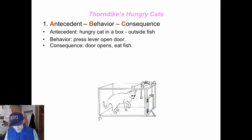Thorndike had some cats. A, B, C. Here's the cat story. He had a hungry cat in a box with a fish outside the box. The antecedent, the conditions, hungry cat in box, fish outside the box. The behavior, the cat would do a lot of behaviors and eventually press the lever that opened the door. And the consequence, the cat would then eat the fish.